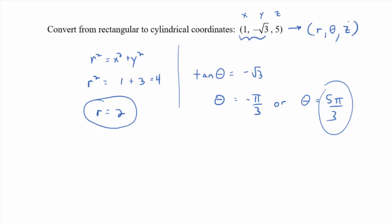So what's our ordered triple? And then 5, yeah. 2, 5 pi over 3, and then 5.